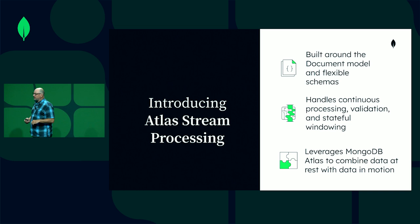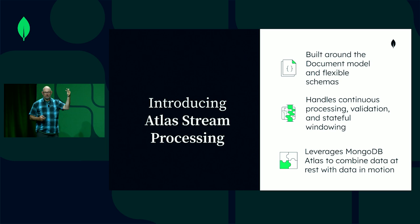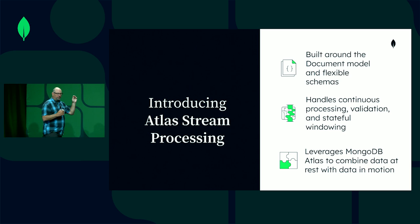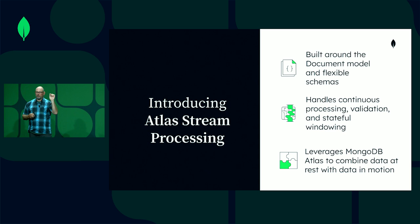Stream processing is built around the document model and handles continuous processing of data. In a regular database, we design a query, run it, a plan is created, it might use an index, it returns results to a cursor, and we iterate over the cursor. In stream processing it's different — you're always running the query. It's continuously running, filtering, matching, projecting — whatever your statement says — from source to sink. It's always emitting data based on whatever that query is. A little bit different processing paradigm, and we had to handle that in MongoDB to make it work.